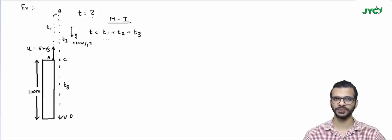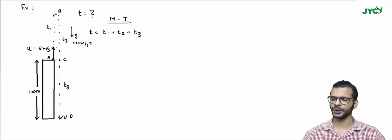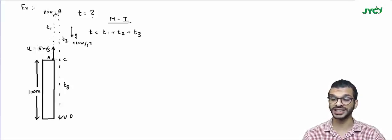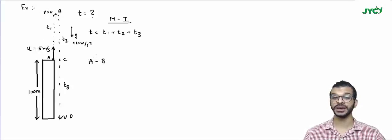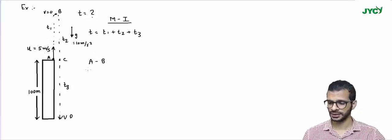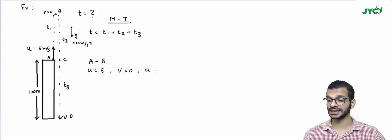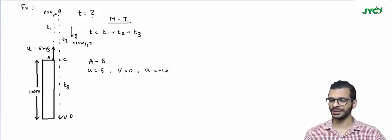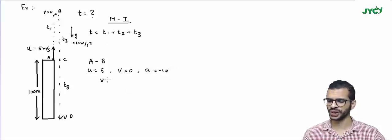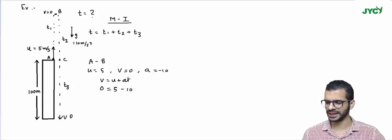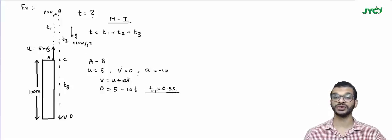To find T1, I analyze motion from A to B. For A to B, the initial velocity is 5 meter per second and the final velocity is 0 (ball is at rest at the top). Acceleration is minus 10 meter per second square. Using v = u + aT: 0 = 5 + (−10)T, so T1 is equal to 0.5 seconds.